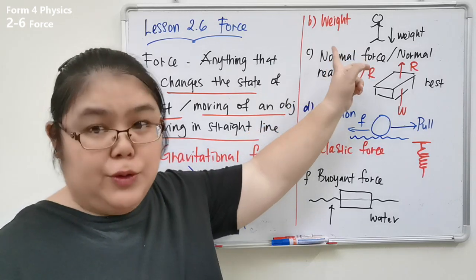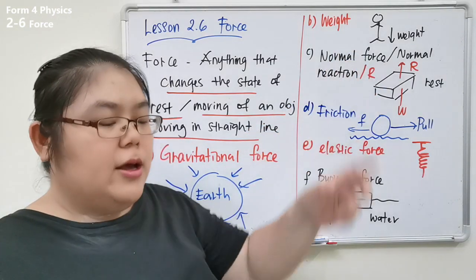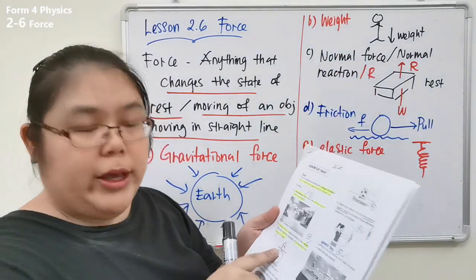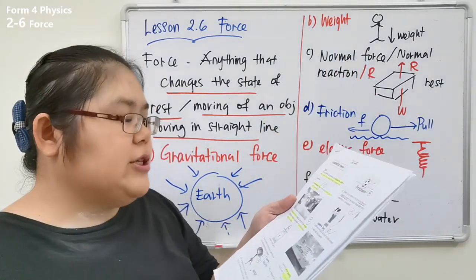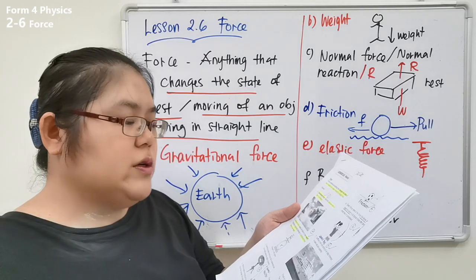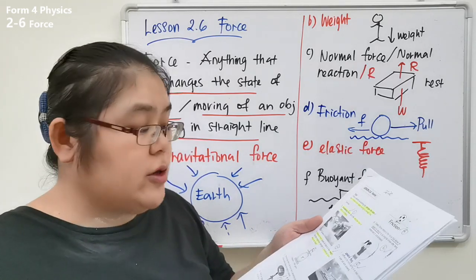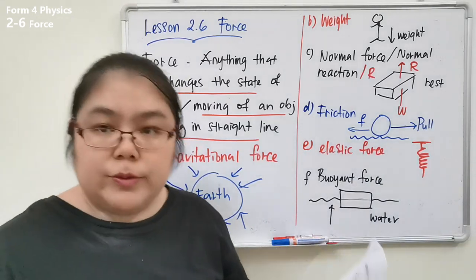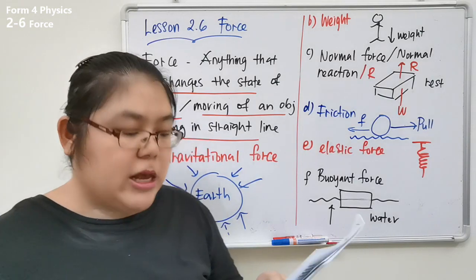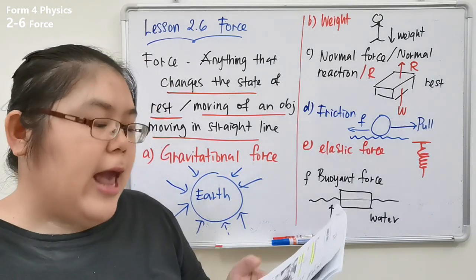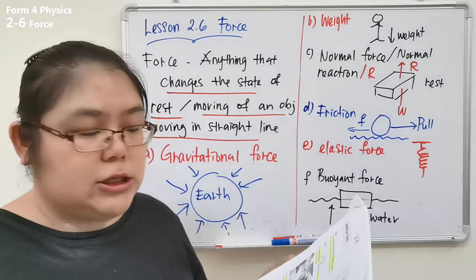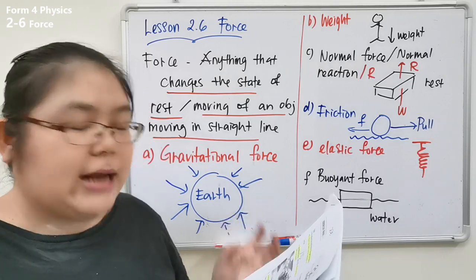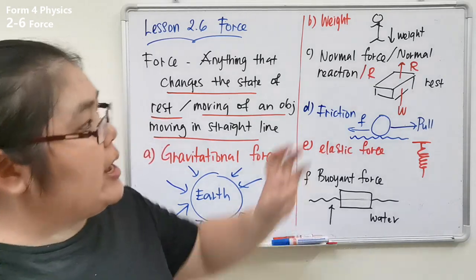The second example is weight. Gravitational force causes all objects to have weight. The magnitude and strength of the gravitational force acting on an object determines its weight, so every object must have a weight because of gravitational force.